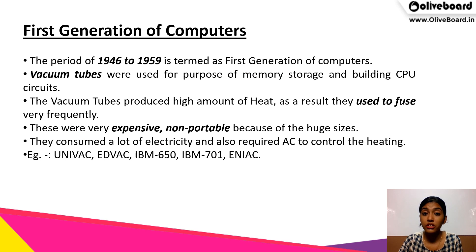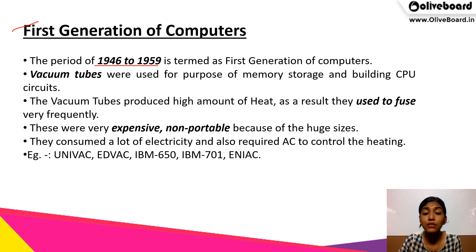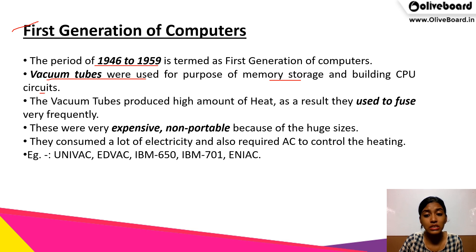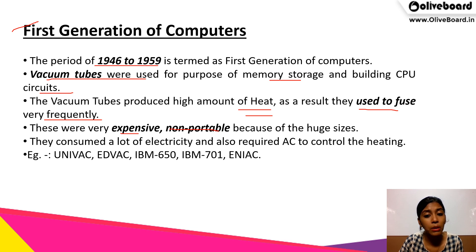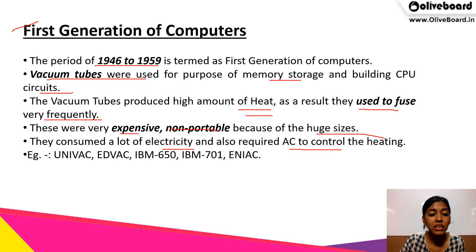Now we will start with the generation of computers. The first generation of computers was in the period of 1946 to 1959. In these computers, vacuum tubes were used for memory storage and also for building CPU circuits. These vacuum tubes produced a high amount of heat and therefore they used to get fused very frequently. They were also very expensive and non-portable — they could not be moved from one place to another because of the huge size. They consumed a lot of electricity and also required AC to control their heating. Examples are UNIVAC, EDVAC, IBM 650, IBM 701, and ENIAC.